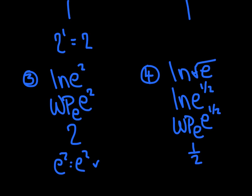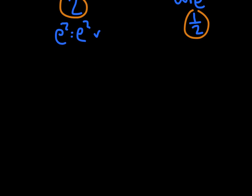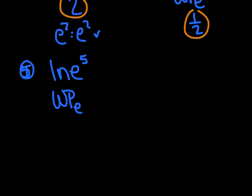What you're noticing here is something I like to call the ZAP rule. The natural log of E is 1, and 1 times 2 equals 2. Again, the natural log of E is 1, and 1 times one-half is one-half. Let's test that on another example: the natural log of E to the fifth power. What power of E equals E to the fifth? The answer is 5. The natural log of E always equals 1, and 1 times 5 is 5.